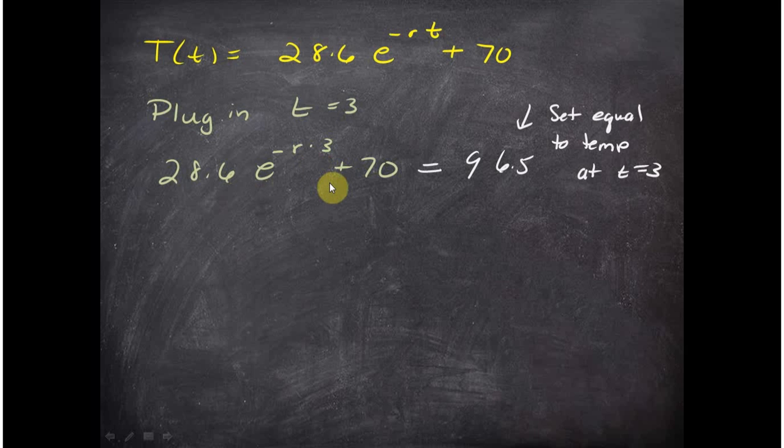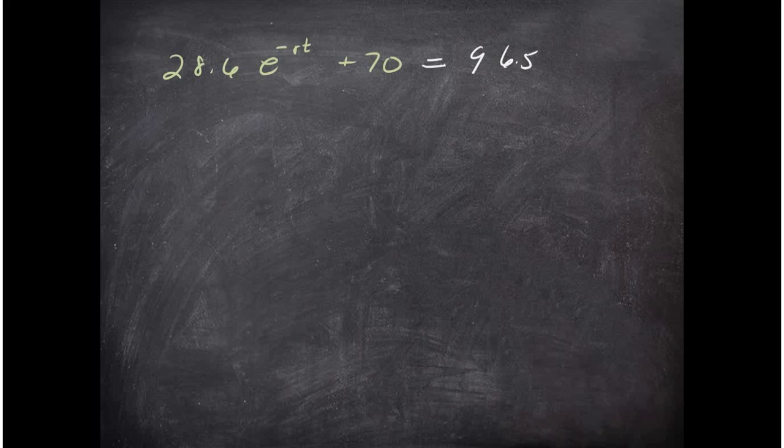So I'm going to plug in. Now step three: I'm going to plug in t equals three in for t. And now I have that the y value is known, it's 96.5, and I'm going to solve this equation for r. How do I do that?